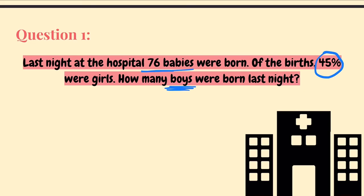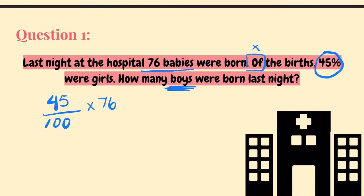What you have to do first is recognize that 45 percent — percent means out of a hundred, so anytime you see a number and percent, I would write the number and right below write 100. Then 45% 'of' — whenever you see the word 'of,' it means you have to multiply it with the total number. So 45% of 76 babies: 'of' means multiplication of 76 total babies. Since you'll have a calculator in the math portion, you just take 0.45 multiplied by 76, which equals 34.2.